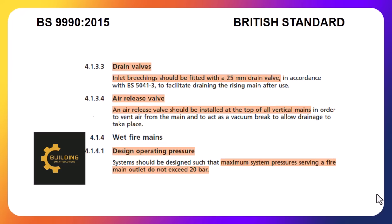Each breaching inlet should be fitted with a 25mm drain valve. Each vertical main should be installed with an air release valve. The system pressure must be designed so that the maximum pressure serving a 5-main outlet does not exceed 20 bar in any case.